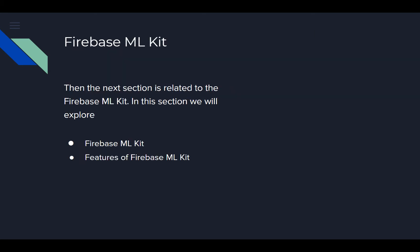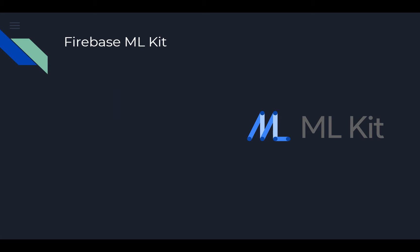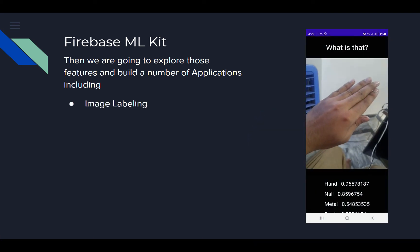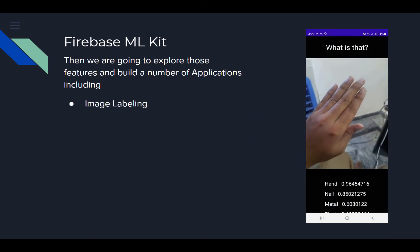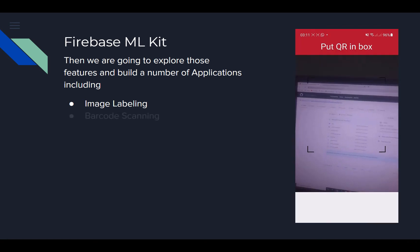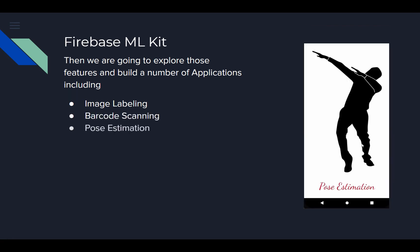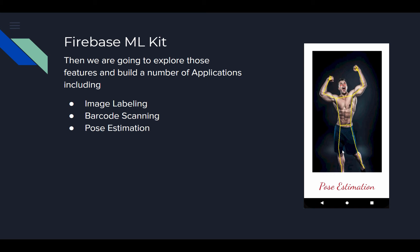Then in the second part of the course, we will learn about Firebase ML Kit. In this section, we will explore Firebase ML Kit and the features it provides. By exploring those features, we are going to build a number of applications, including an image labeling application for recognizing different things, barcode scanning for scanning different barcodes, and pose estimation for detecting human poses.